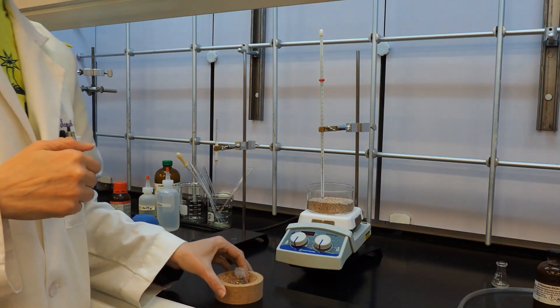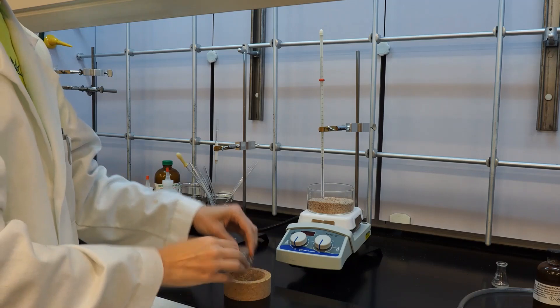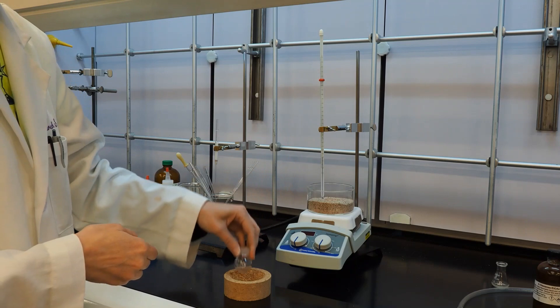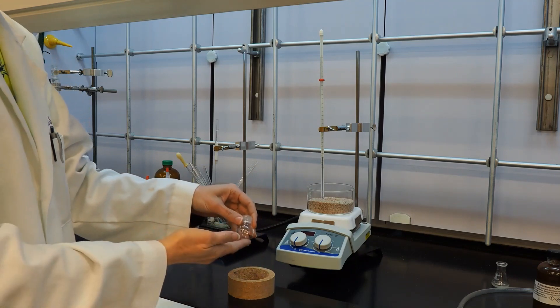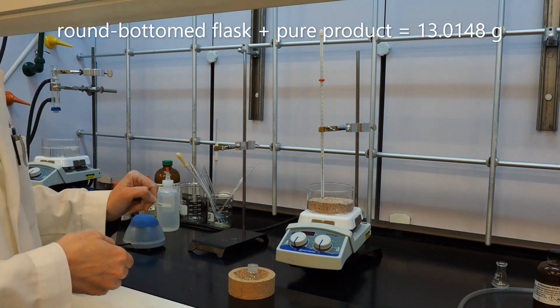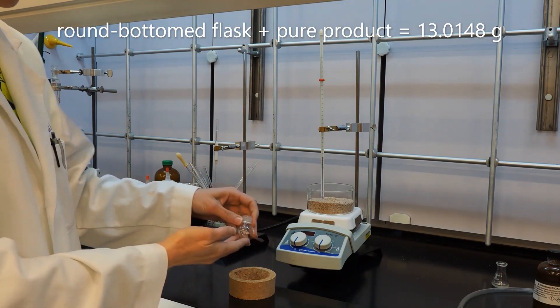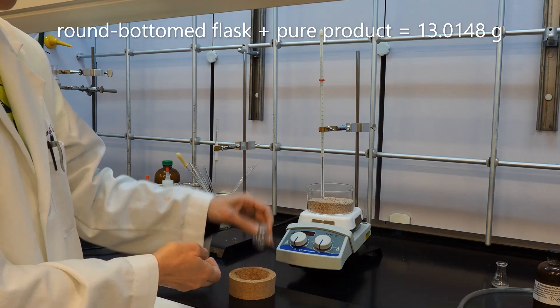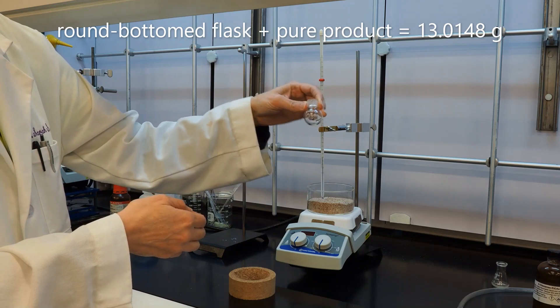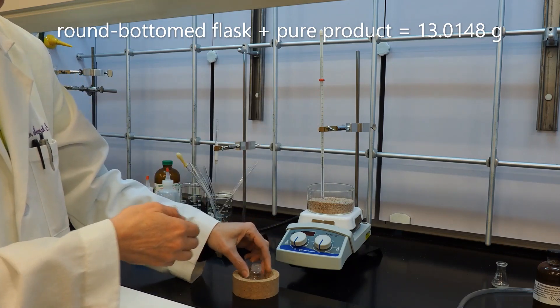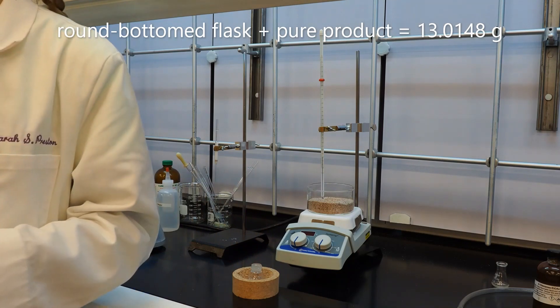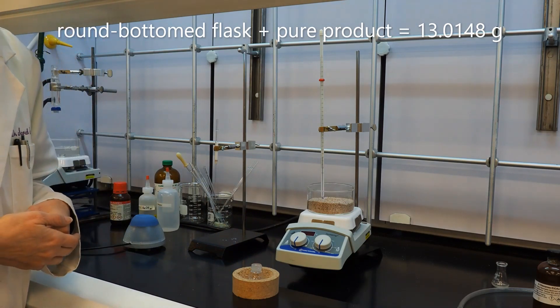So I decided not to rotavap because I had a sand bath here. And off camera I boiled this down to just the product using the sand bath and the nitrogen just like we did before with the ether. And I weighed this flask plus our colorless liquid product, which there is a couple drops in there of it. And the flask plus the purified product weighs 13.0148 grams.